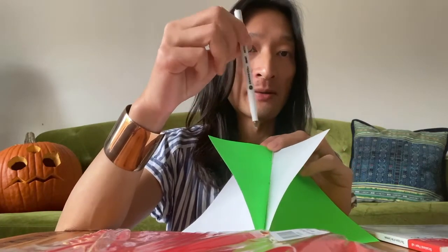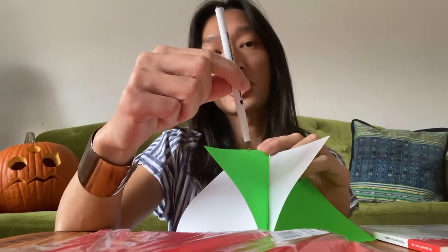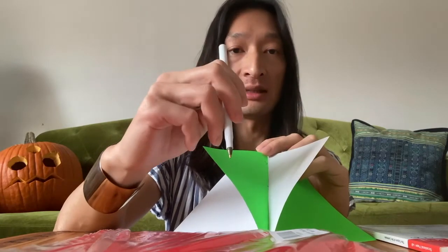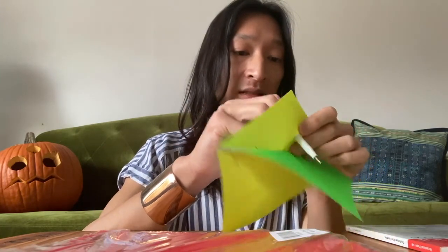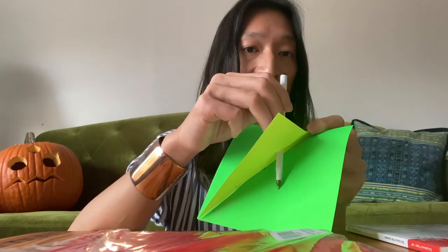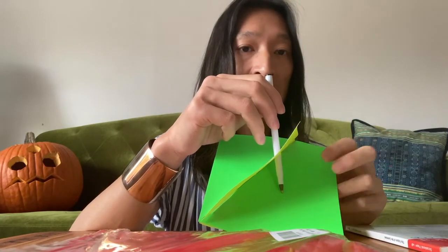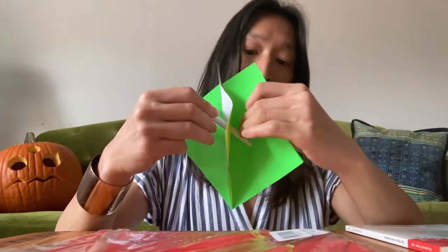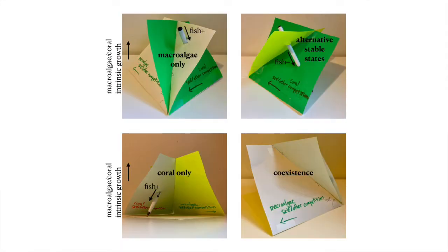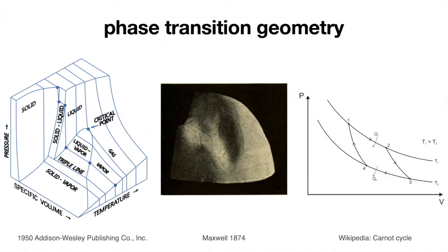If we use this pen to represent the abundance of fish — what fish does is graze on macroalgae — we go from a macroalgae dominated state into a region of alternative stable states, something that has been seen in the Caribbean. We then puncture the second plane and end up in a state where there are only corals. This kind of geometric structure has its closest relative in physics in the phase diagram, where we can visualize phase transitions from liquid to solid to vapor. Thank you for listening.